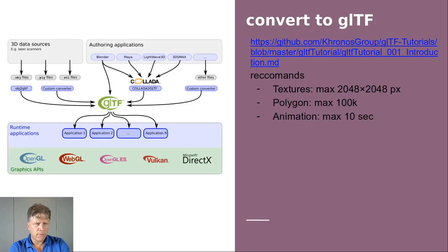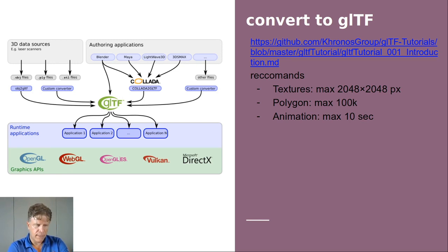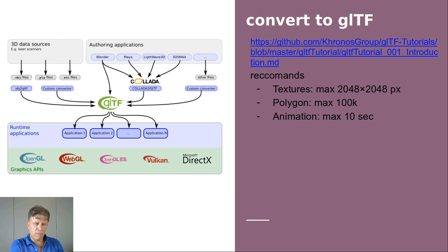If you don't have a GLTF model, you can convert from other formats. Blender from version 2.80 allows you to import and export in GLTF format. GLB is the binary version of GLTF — we use it to upload in the Odoo application, as it is much more compact. We recommend using a very short animation if needed — maximum 10 seconds — no more than 100,000 polygons, and textures no bigger than 2048.